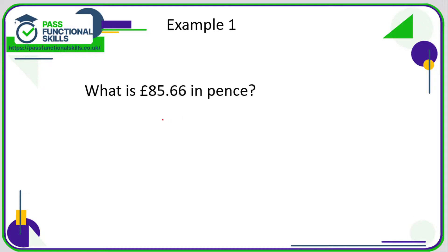Let's look at a few examples. What is £85.66 in pence? Just take out that decimal point — 8566 pence. Much easier than thinking of it as 85.66 times 100. Still the same answer, but the quick way is just get rid of that decimal point: 8566p.